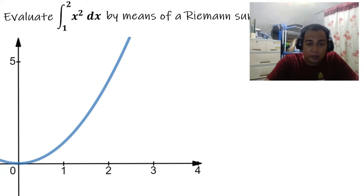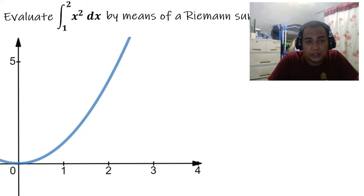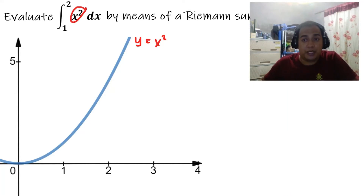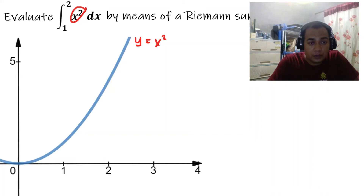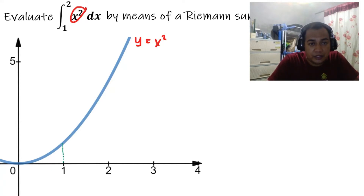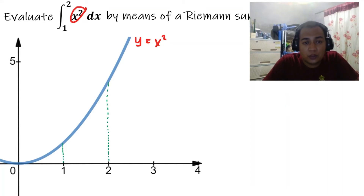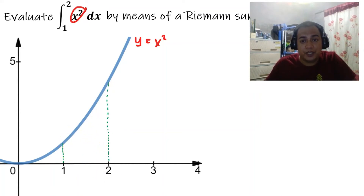Our lower boundary is 1. Our function is y equals x squared, which is a parabola that opens upward with vertex at (0, 0). Our lower limit is 1, so we construct a vertical line at x equals 1, and our upper limit is 2. Interpreting the integral, we are solving for the area of the region under the curve.